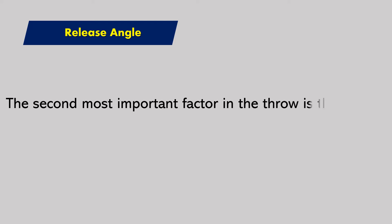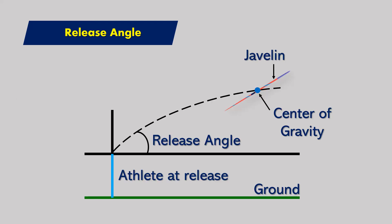The second most important factor in the throw is the release angle. For most objects the optimal flight angle is 45 degrees. Due to the javelin's aerodynamics and speed, its release angle should be around 36 to 40 degrees.